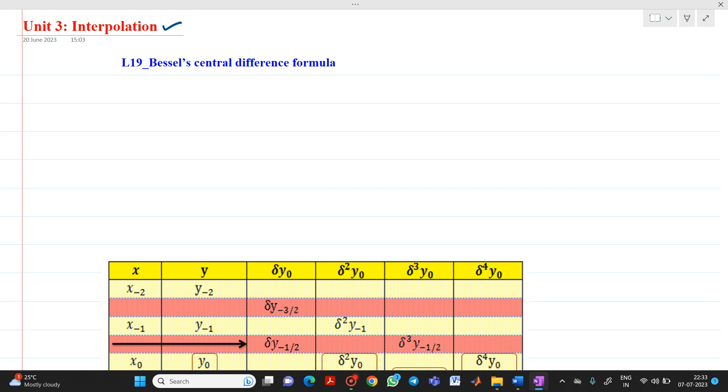Let us consider that we have five values showing the relation between some function y equals f of x. We have x and y values. This will be your x0, y0 value. This will be your x1, y1 value. Here you will have value x2, y2. Now, this will be denoted as x minus 1, y minus 1 and x minus 2, y minus 2.